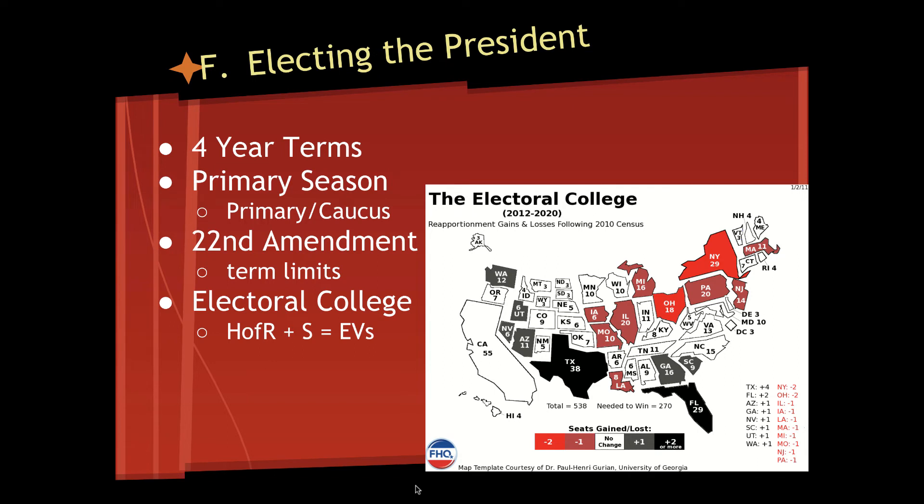Right now in 2020, we are looking at electing a President of the United States. The President serves a four-year term. From January through June we are in the primary season, where all 50 states will either hold a primary or a caucus. Think about Iowa and the challenges they had with their caucus system. Most states, like Michigan, have a primary where things can get done a lot more quickly.